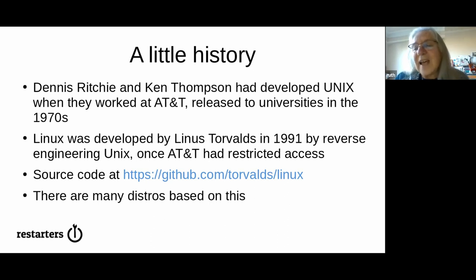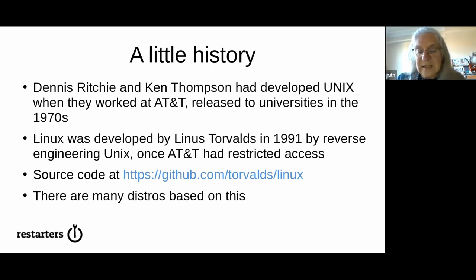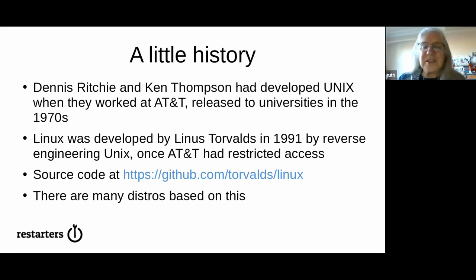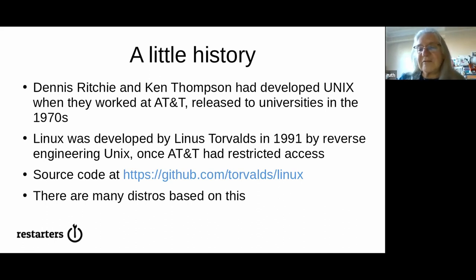AT&T eventually refused to release Unix to the commercial world — they wanted to charge for it. So Linus Torvalds in Finland sat down and reverse engineered a new operating system which he called Linux. He looked at the way UNIX worked, had access to the source code, and wrote completely new code to work in exactly the same way, so that there wasn't a single original line of code from UNIX. AT&T couldn't sue him for copyright. A huge amount of work.